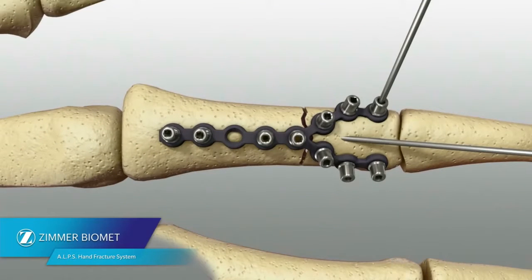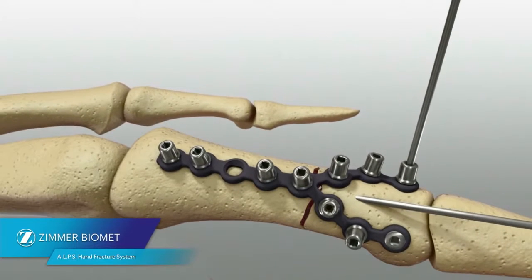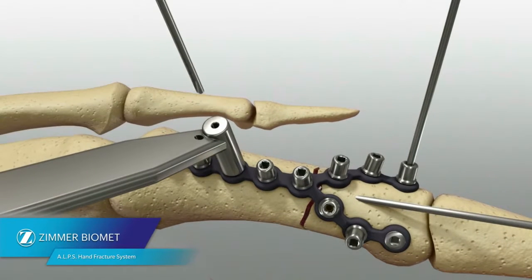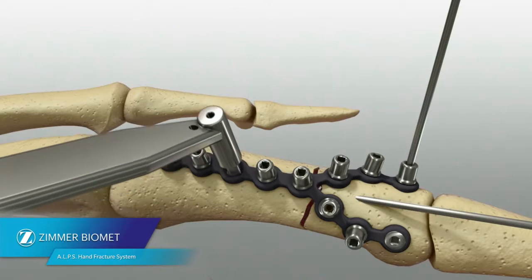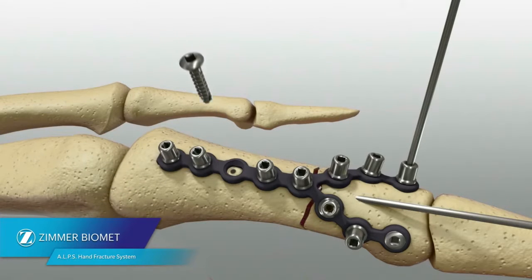Remove the fast guide using the driver and select a locking, non-locking or multi-directional locking screw based on the plate hole and type of fracture. When desired, a 1.5 mm non-locking screw or 2.5 mm locking screw paired with a washer can be placed through a compression hole to achieve compression at the fracture site. Use the same driver to insert the screw into the plate.